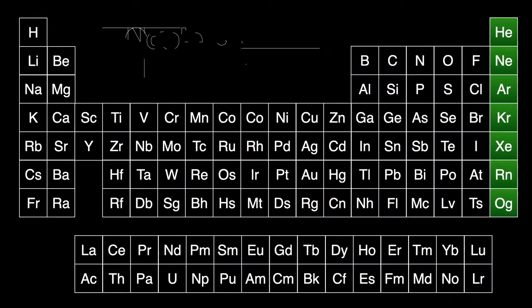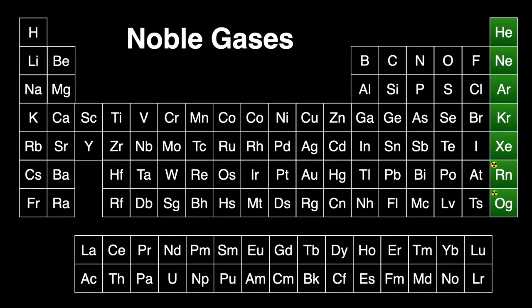As we've seen, the right-hand column of the periodic table hosts what we call the noble gases. These are the standoffish elements that really don't want to participate in chemical reactions. Why?